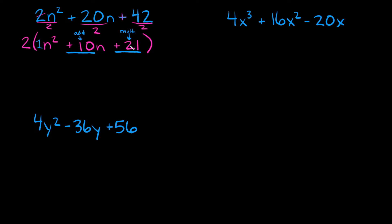So what are two numbers that multiply to 21? There's 1 times 21 and 3 times 7 — those are the only two pairs that multiply to positive 21. So which one of these two pairs adds up to positive 10? Well, 1 plus 21 is 22, and 3 plus 7 is 10. So positive 3 and positive 7 are the numbers we're going to use when we factor this quadratic.